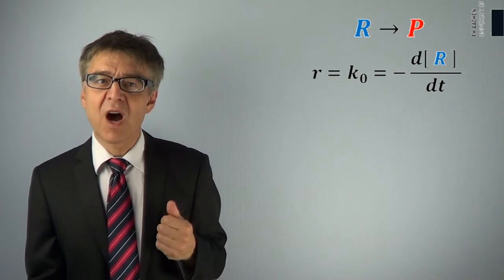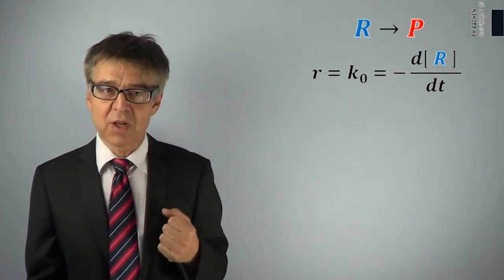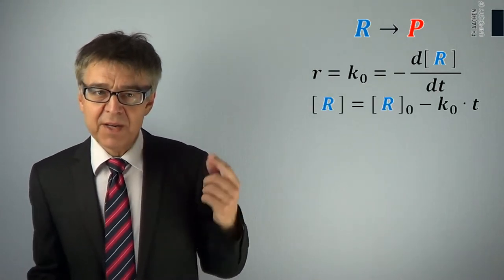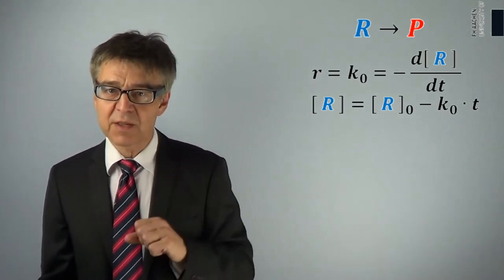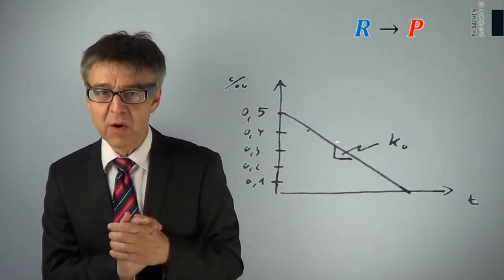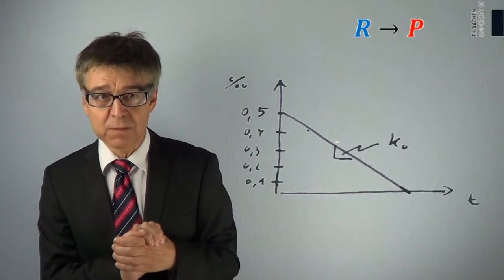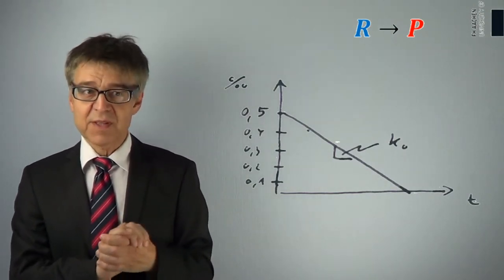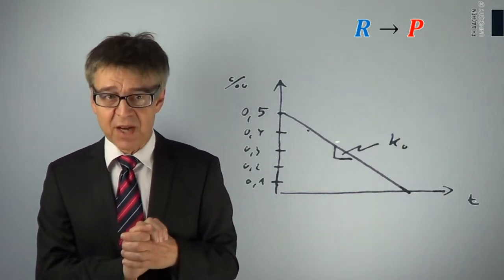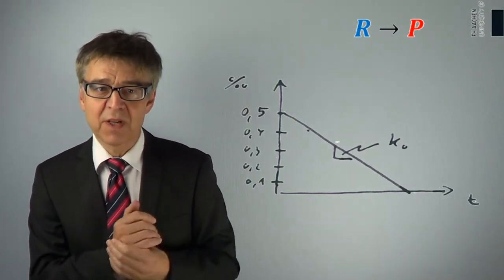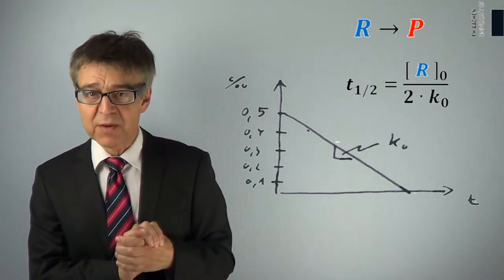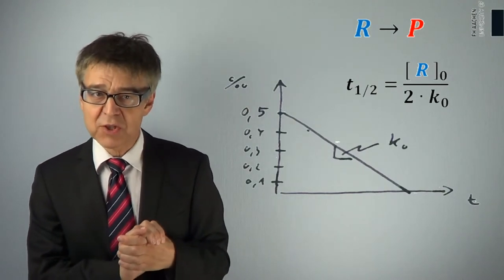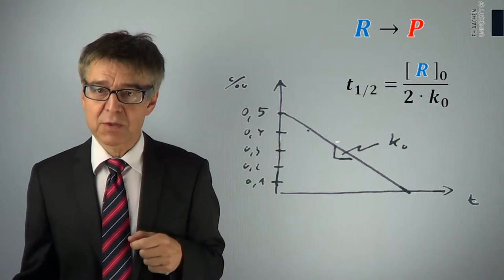The rate law is a differential equation. The derivative of the concentration of R with respect to time is a function of the concentration of R itself. By integrating, we may end up with concentration as a function of time — the so-called integrated rate law. For a zero-order reaction, the integrated rate law is a linear equation. An important characteristic of a kinetic process is the half-life: the time after which the concentration has dropped to half its initial value. Half-life can easily be calculated using the integrated rate law. The half-life of a zero-order reaction is not constant but gets shorter as the reaction proceeds.